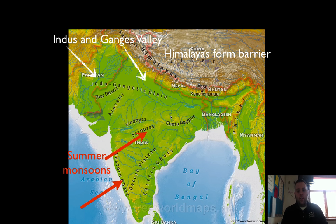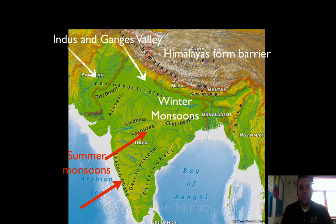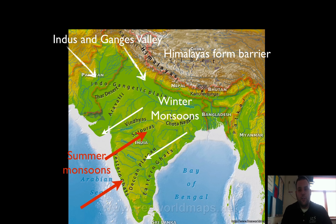In the wintertime, the winds shift and come out of the north — these are the winter monsoons. The winds come off the Himalayan mountains and bring dry, crisper air, which dries out the area. In the wintertime, it's a lot drier. It's still hot, but it's not as humid as you'd think. Depending upon where you are in India, you may have to get water out of wells, and the rivers may dry up during the winter monsoons. It's a drastic change from the summer monsoons to the winter monsoons.